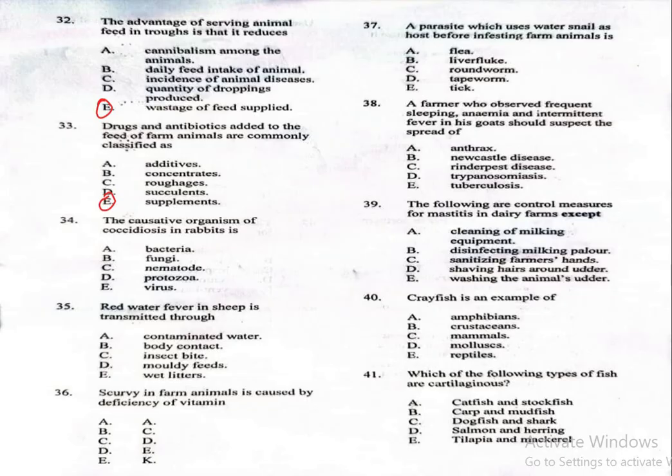Question 34 says: the causative organism of coccidiosis in rabbits is A, bacteria; B, fungi; C, nematode; D, protozoa; E, virus. The correct answer is D, protozoa. Coccidiosis is caused by protozoan parasites.